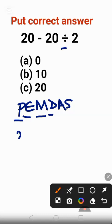We have 20 minus 20 divided by 2 will give us 10. Now 20 minus 10 equal to 10. This is the correct answer.